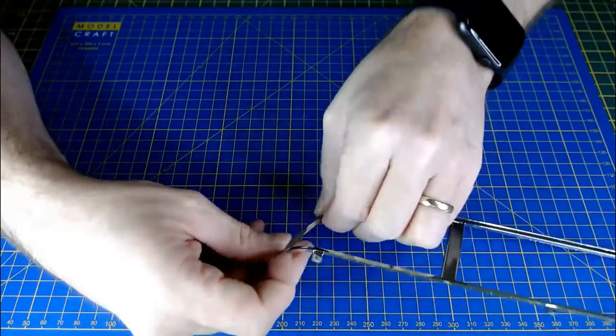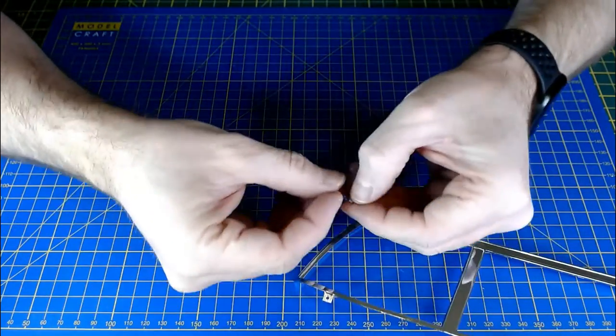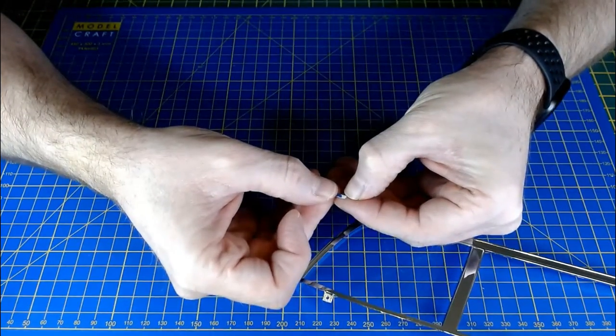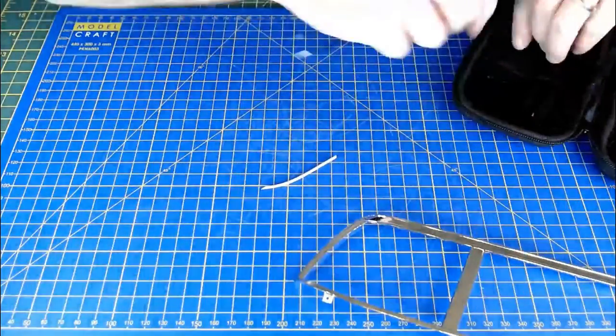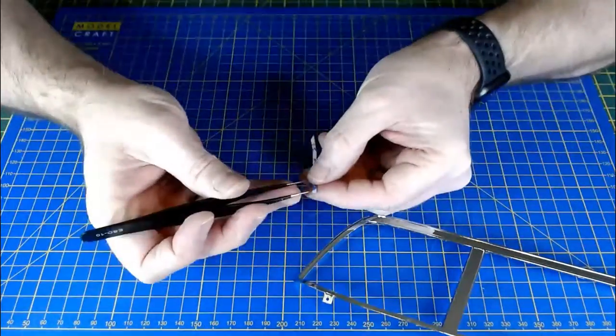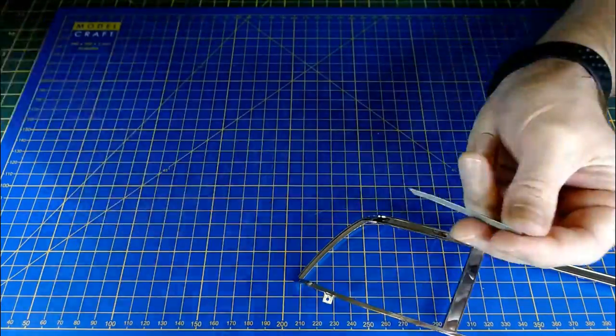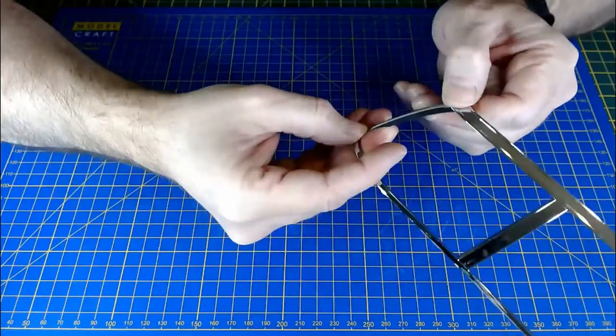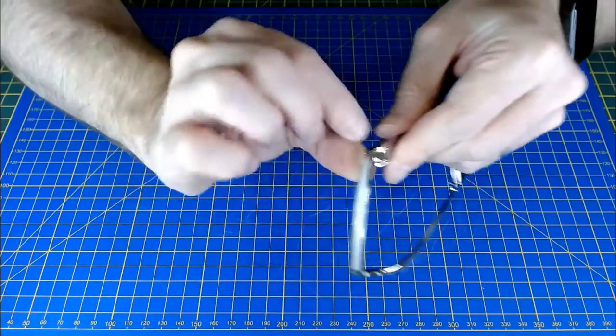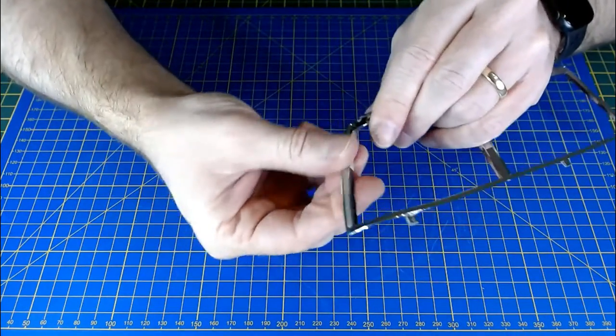So now I've bent it to shape, I need to take the backing off and see if it'll stick nicely. Yeah, it's bending to shape and that seems to have gone a bit better.